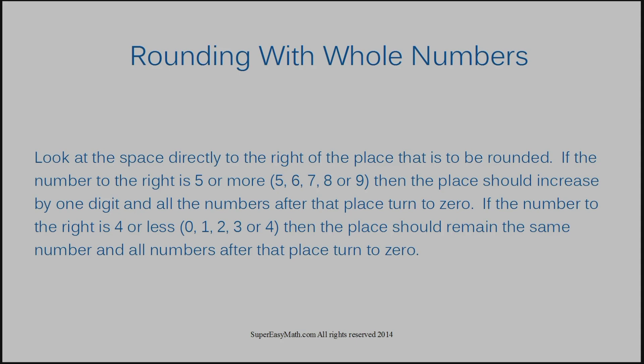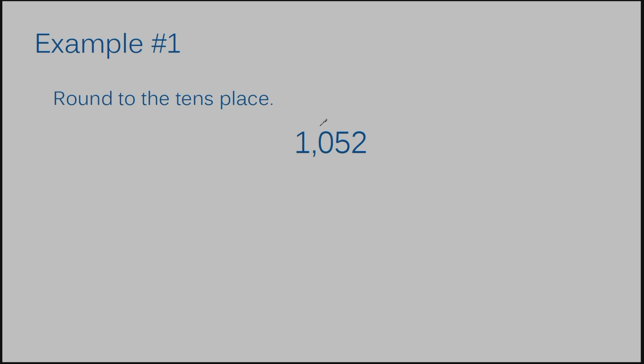I know that was a mouthful. Let me show you what that means in some examples. Example number 1. Our directions tell us to round to the tens place. We need to remember where our tens place is. The very last digit when dealing with whole numbers is the ones place, and the next digit is the tens place. If you're not familiar with your place values, you might want to check out my video on place values.